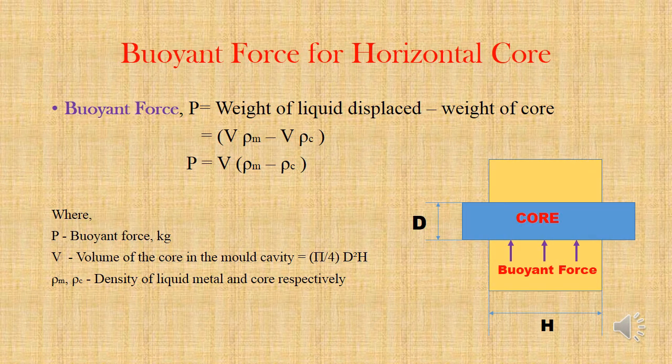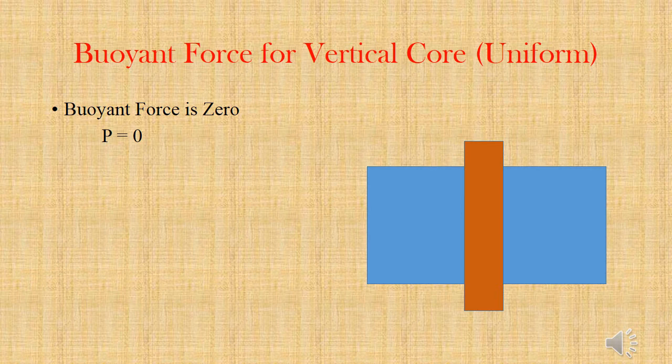Now we are seeing the buoyant force acting on a horizontal core. When molten metal is poured into the mold cavity, it exerts some force on the horizontal core — that is the buoyant force. The buoyant force formula is: weight of liquid molten metal displaced minus weight of core, where weight = volume × density. Since the volume of displaced liquid molten metal and the volume of core are the same, the formula becomes: buoyant force = volume × (density of molten metal − density of core). For a uniform vertical core, the buoyant force is zero, as no force acts on the core.